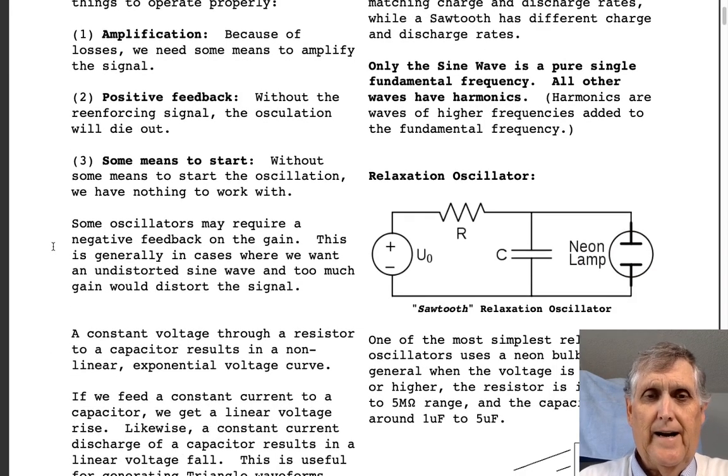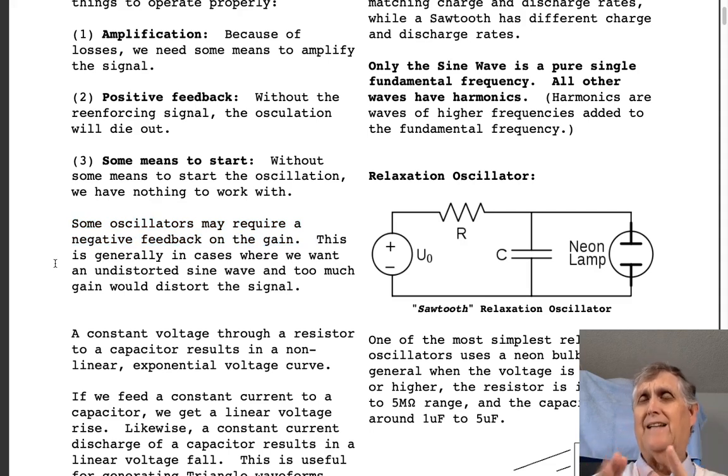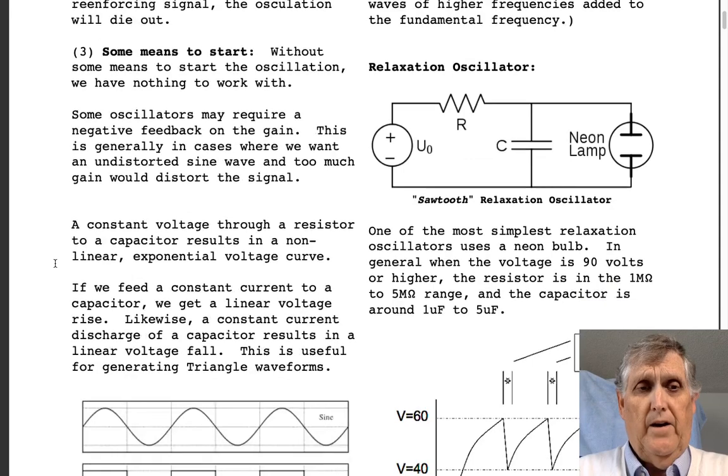So anyway, oddly enough, having told you an oscillator needs positive feedback, there are some that require negative feedback in the gain. And you're going, what? Which is it? Positive or negative? Well, sometimes it can be both. Now, in this case, we want an undistorted sine wave. And too much gain would cause the top and bottom half of the sine wave to flatten out. So in that case, if the amplitude of the sine wave gets too big, we have negative feedback to lower the gain.